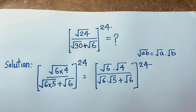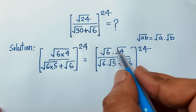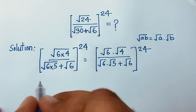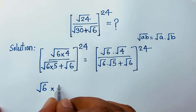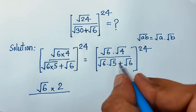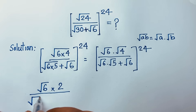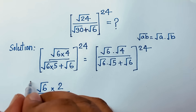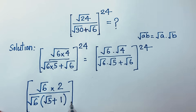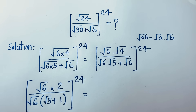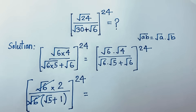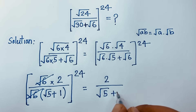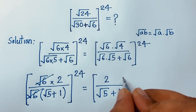I solve this question step by step. Now, square root 4 equals 2, so the numerator is square root 6 times 2. In the denominator, square root 6 is common, so I take square root 6 as a common factor. This gives square root 5 plus 1 in the bracket. Then square root 6 cancels out, and we find 2 over (square root 5 plus 1), whole to the power 24.